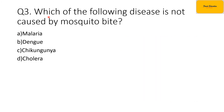The third question is: which of the following diseases is not caused by mosquito bite? Option A is malaria, B is dengue, C is chikungunya, and option D is cholera. Malaria, dengue, and chikungunya are all caused by mosquito bite. However, cholera is a disease which is not caused by mosquito bite. So the correct option is option D, cholera.